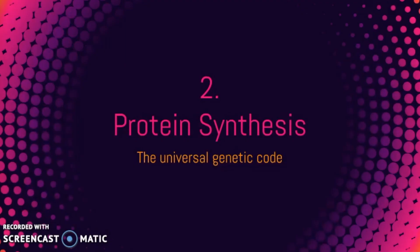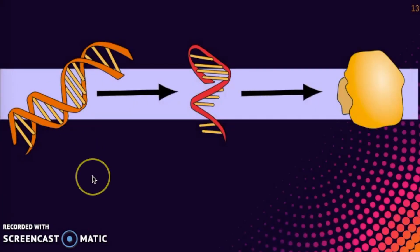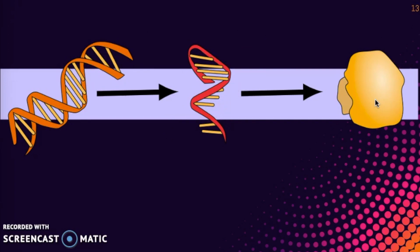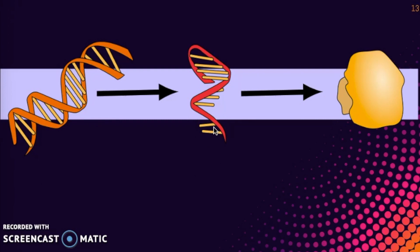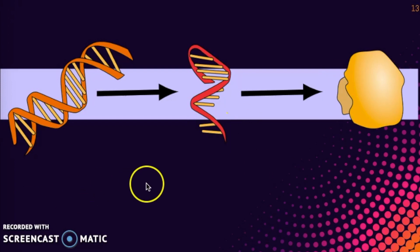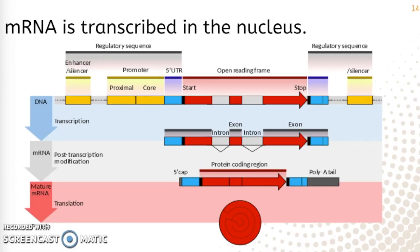Now let's get into protein synthesis, our universal genetic code. The central dogma of molecular biology states that we go from a DNA molecule containing genes, to a single-stranded mRNA, to then a fully folded functional polypeptide made of amino acids. The step from DNA to mRNA is called transcription, and from mRNA to an actual protein is called translation. RNA polymerase reads the DNA molecule and synthesizes complementary mRNA molecules that later determine the order of amino acids in the polypeptide.